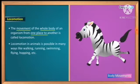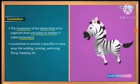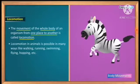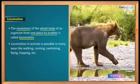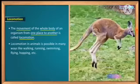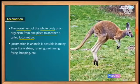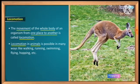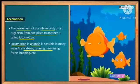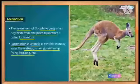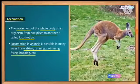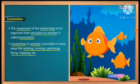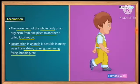The movement of the whole body of an organism from one place to another is called locomotion. Locomotion in animals is possible in many ways like walking, running, swimming, flying, and hopping. Some animals walk, some run, some swim, some fly like birds, and some hop. So locomotion is possible in different ways in different animals.